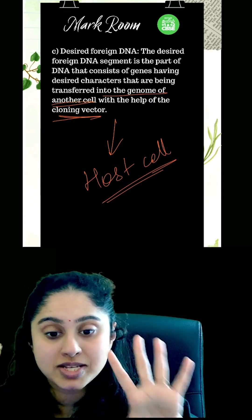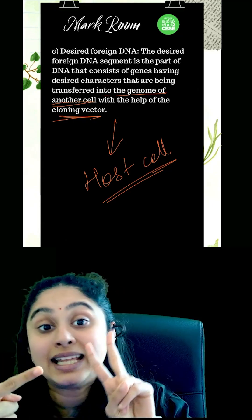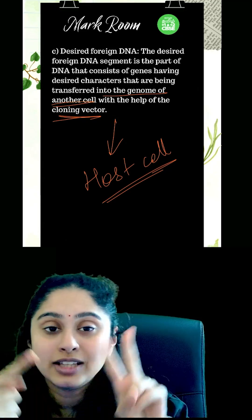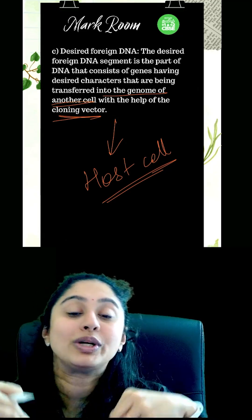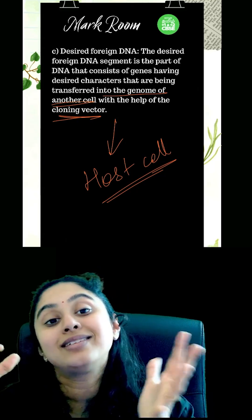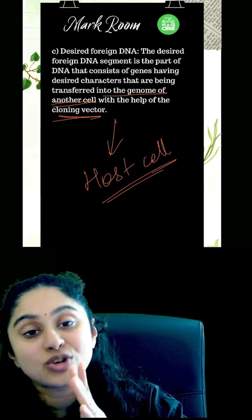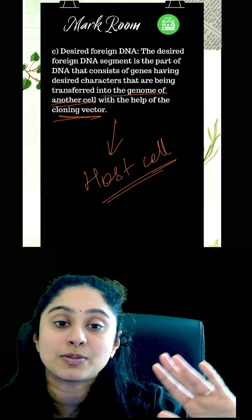So in summary, three simple points: firstly the enzyme, secondly the vector, then you stitch both of them and create the foreign DNA so it can be placed in a host, which will replicate and express the product for you.